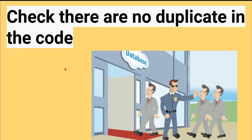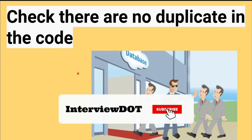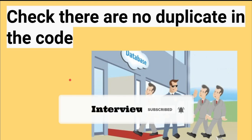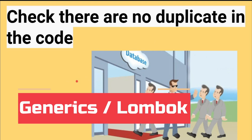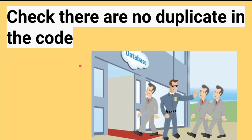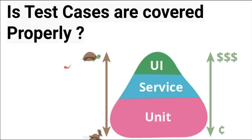The next clean code tip: check that there are no duplicates in the code. Duplicate code means I need to manage it in two places, and it's very difficult to identify once introduced. While writing the code, identify duplicates and extract them so that only one block of code exists in the project. Avoid duplicates or boilerplate code using generics or Lombok — there are many libraries available. Try to use them to avoid duplicating code in your project.